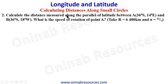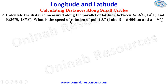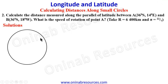We now go to problem two. Calculate the distance measured along the parallel of latitude between A at 36 degrees south, 14 degrees east, and B at 36 degrees south, 18 degrees west. What is the speed of rotation of point A? Take R to be 6400 kilometers and pi to be 22 over 7. In our solution we sketch the diagram — both points lie on the same latitude, 36 degrees south.